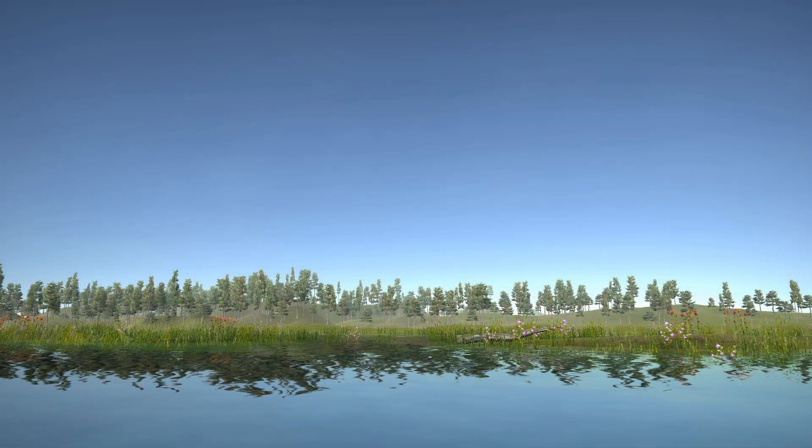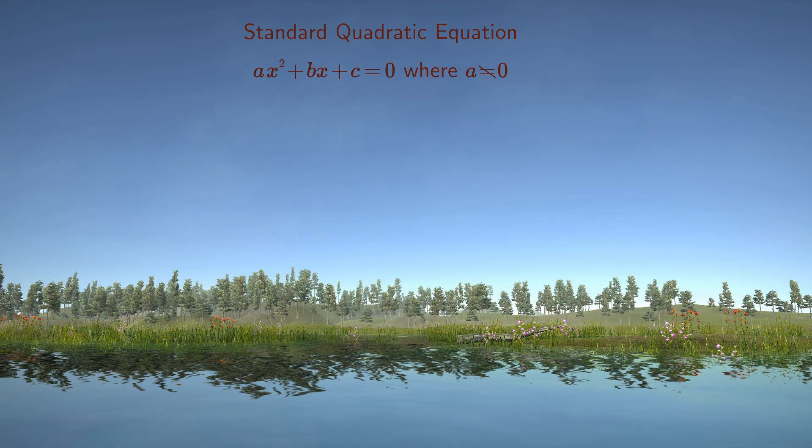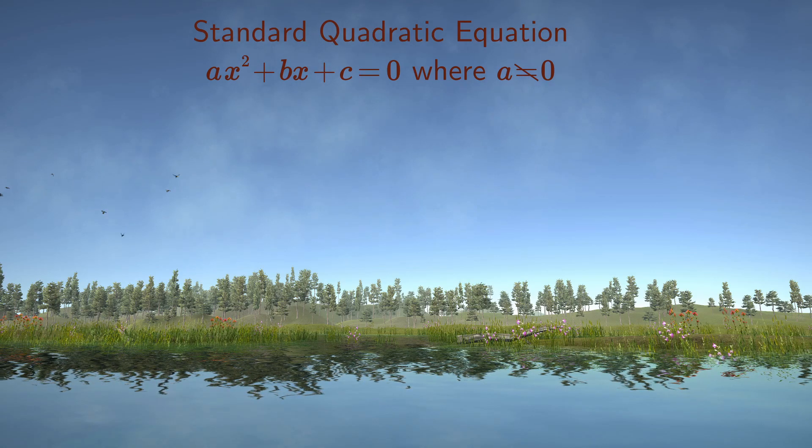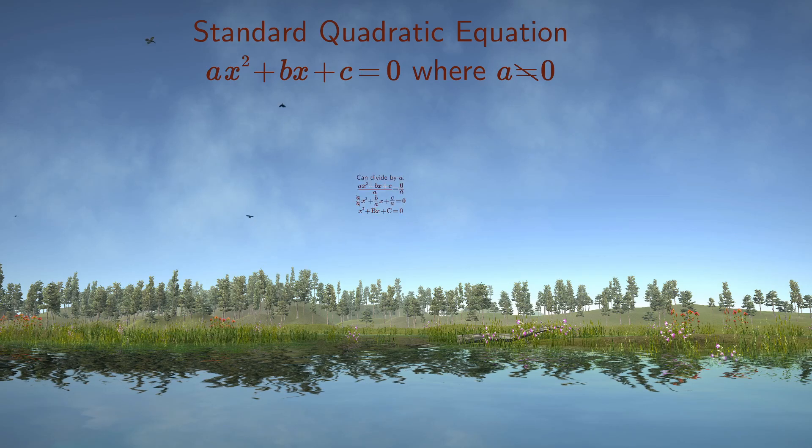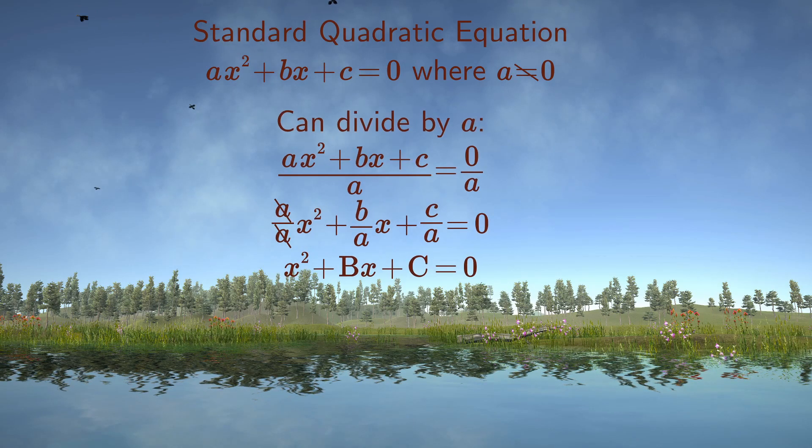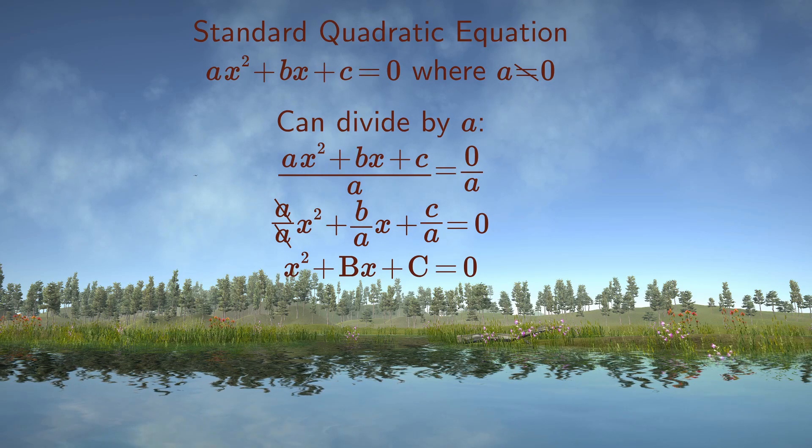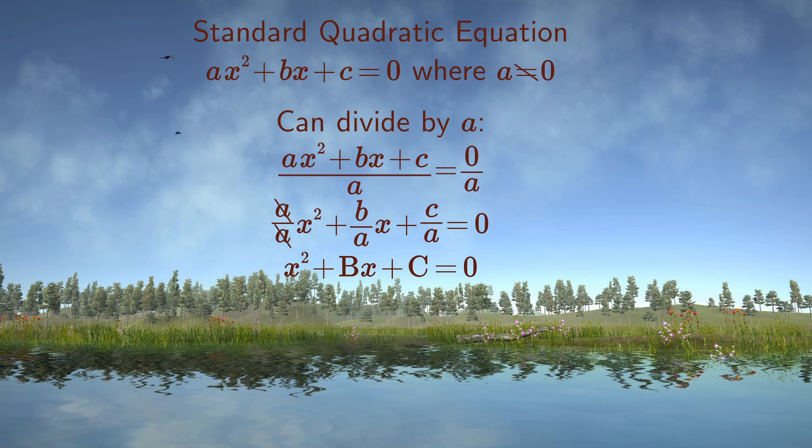The standard quadratic equation is given by ax squared plus bx plus c equals zero. Note that we could divide the entire equation by a unequal to zero to change the first coefficient to one. But to compare the new method with the formula in general used today, which contains a, we keep it like this for now.